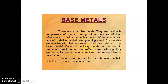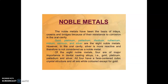Base metals are reactive with their environment — that's why they are known as base metals. They can also be used to protect an alloy from corrosion, which is a passivation process. Although they are frequently referred to as non-precious, the preferred term is base metal. Examples include chromium, cobalt, nickel, iron, copper, and manganese. Note: base metals are corrosion resistant, but gold is the best corrosion-resistant material.